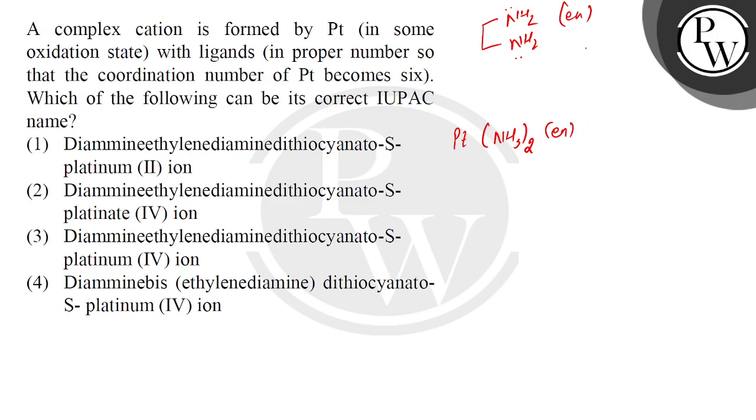How much thiocyanate is there? SCN is negative, di means two and the sulfur is linked. So SCN is twice. This will become your complex. Now how much platinum should it be? It should be two. Now let's see, NH3 is neutral, EN is neutral, SCN carries minus one charge. Obviously, overall it will be charged like this. The coordination number is six.